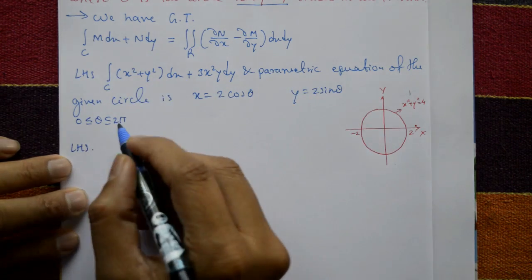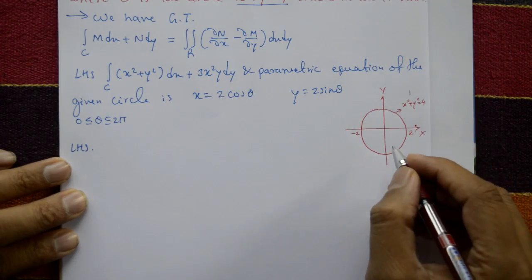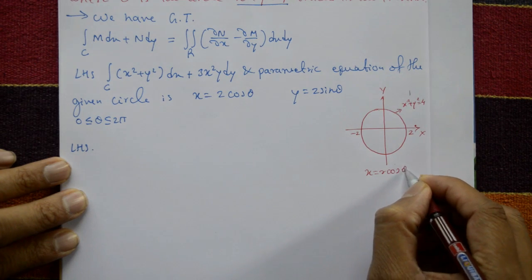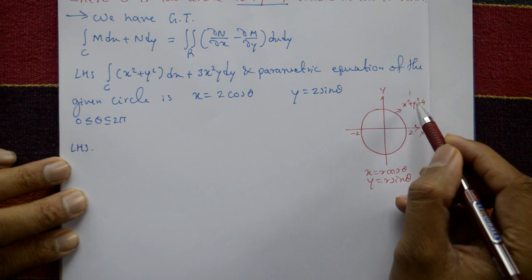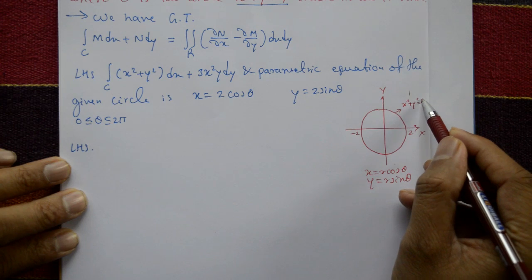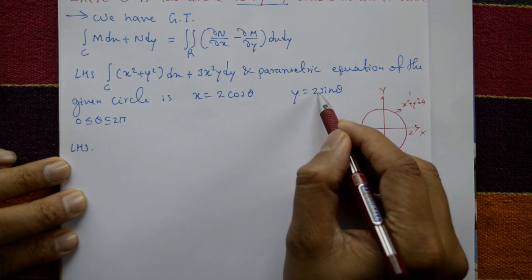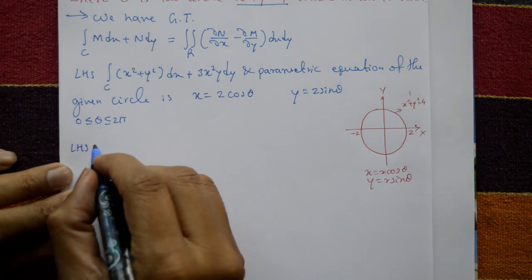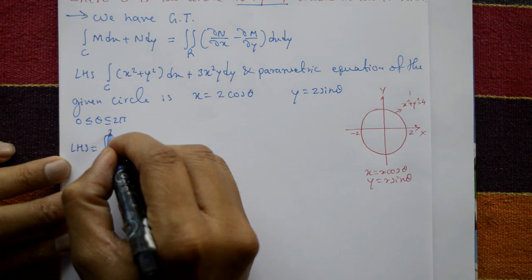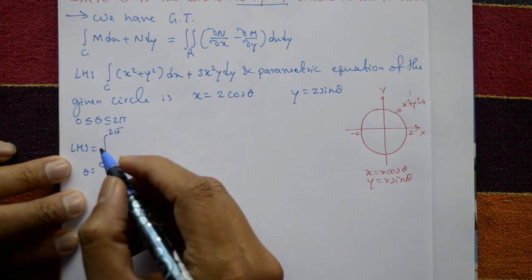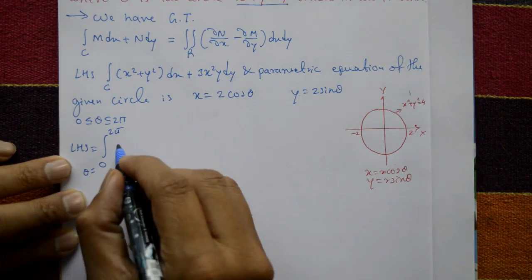We use x = r cosθ, y = r sinθ. Since x² + y² = 4 = r², we get r = 2, so x = 2cosθ and y = 2sinθ. The LHS integral is evaluated with θ ranging from 0 to 2π. Note that x² + y² = 4 throughout.